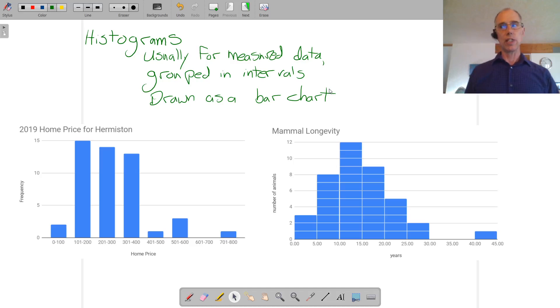And here's a couple of examples. Hermiston home prices histogram. There were a few homes last year under $100,000. There were a lot more, 15 homes that ranged above $100,000 up to $200,000, $200,000 to $300,000, $300,000 to $400,000, and so on. So this gives me a display of what to expect. Most houses were between $100,000 and $400,000 in price.